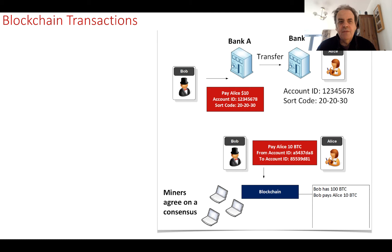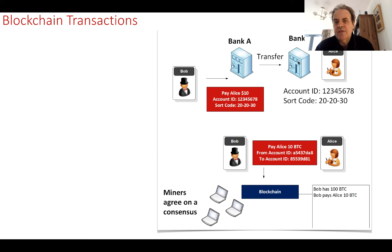In the most basic form, this is how blockchain works. Taking what we see in Bitcoin: in the traditional model of a transaction, Bob contacts the bank and tells his bank that he wants to pay Alice $10. He gives her ID and sort code. There is then a transfer between two banks and bank B will tell Alice that she has now received $10. That is the traditional model — we are using trusted entities on either side, but there are flaws in each of the paths.